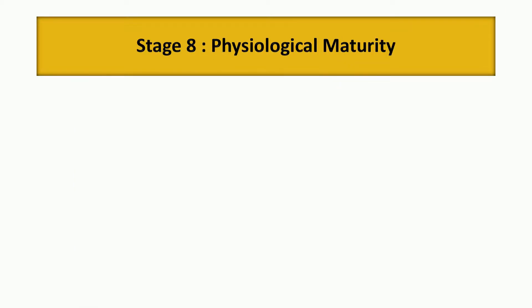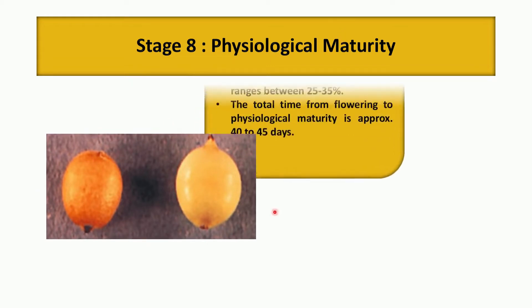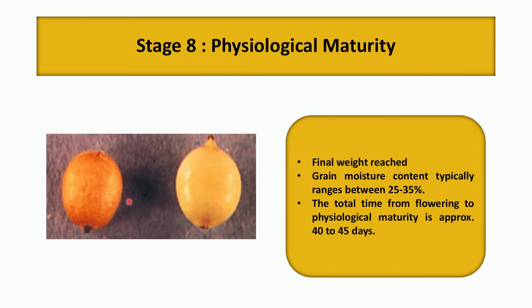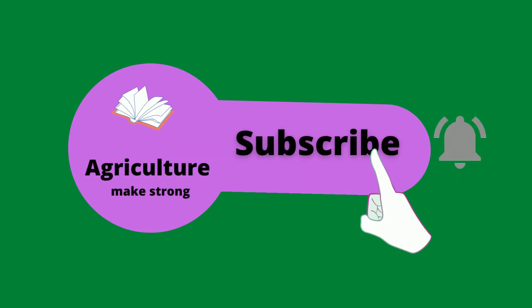The final stage is physiological maturity, stage 8. From flowering to physiological maturity it takes 40 to 45 days. The final weight has been reached and moisture content is maintained in the 25 to 35 percent range. If you want to refer to the presentation for this video, the link is in the description box below. If you like this video, please like, share and subscribe.